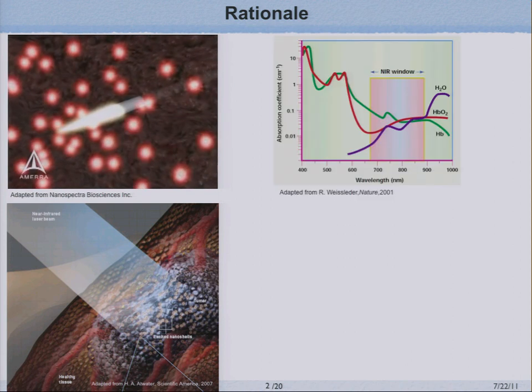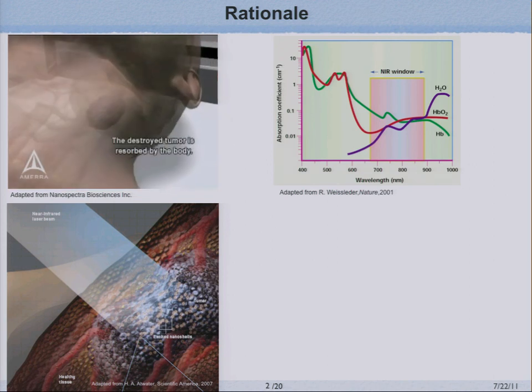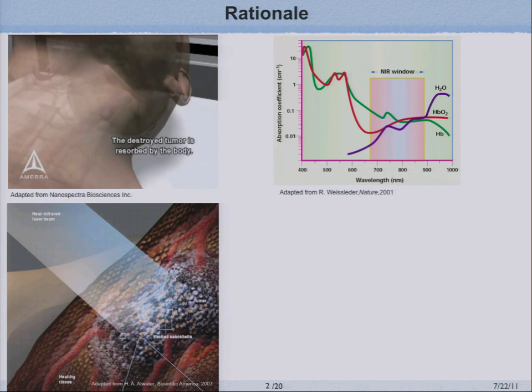You may ask why we're interested in near-infrared light. If you look at this plot here, the horizontal axis is wavelength and the vertical axis plots the absorption of different components in a typical biological tissue—for instance, water and hemoglobin, which is a major component of red blood cells. These absorb minimally in the range between 700 nanometers and 900 nanometers, and we call this the near-infrared imaging window.